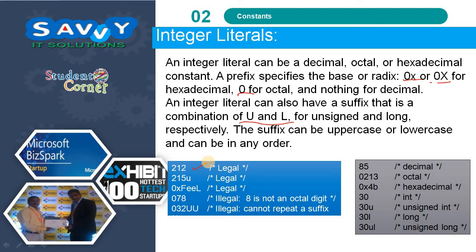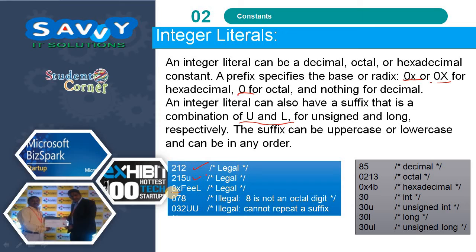For example: 212, 215u means unsigned; 0x means hexadecimal. 0 followed by 3 — these two are illegal. 8 is not a valid octal digit, so that is illegal, and using uu is also not allowed. 85 is decimal, 0231 is octal, and 0x4b is hexadecimal. 30 is integer, 30u is unsigned, 30l is long, and 30ul is unsigned long — this is how we can define integer literals.